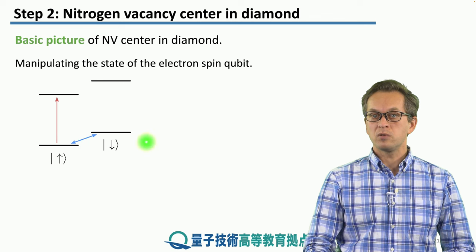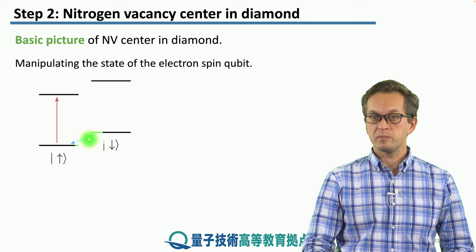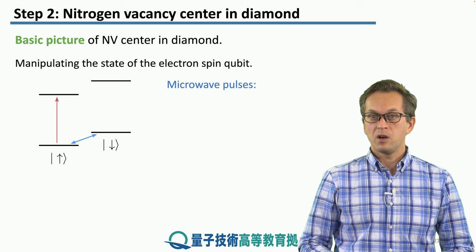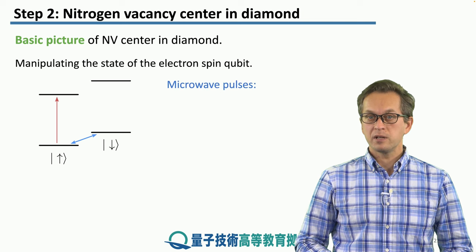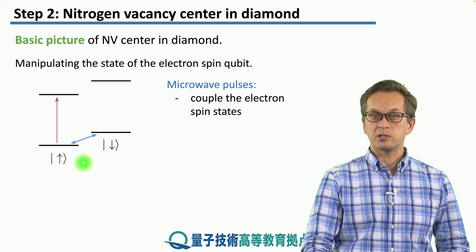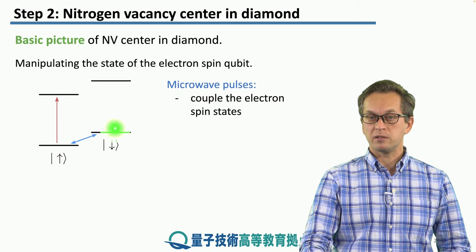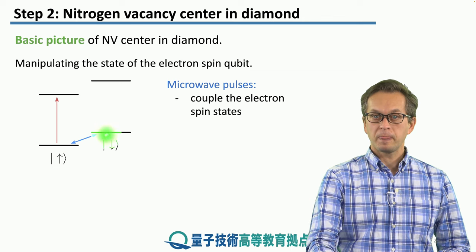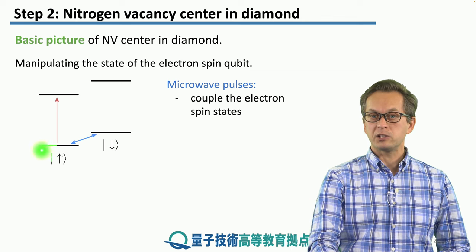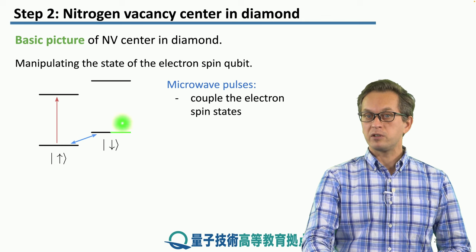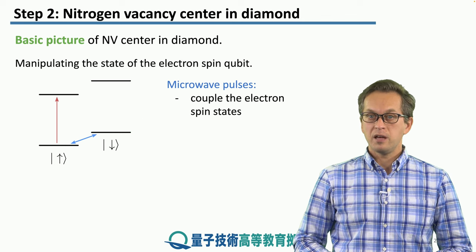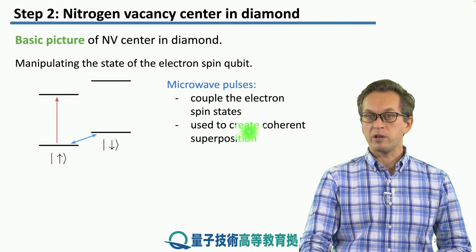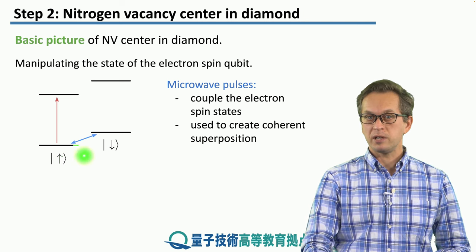This is the basic energy structure. These are the two ground states of the electron spin — we've got a spin up state and a spin down state, and they're nearly degenerate. We can use microwave pulses in order to transfer population from the up state to the down state. If we apply the pulse for half the length, then we create a coherent superposition between the up state and the down state.